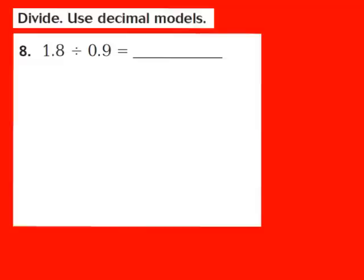Now let's take a look at question number 8 together. The directions say to divide and to use decimal models. For question number 8, they give us 1 and 8 tenths divided by 9 tenths. This question is a little different because we're not dealing with numbers in the hundredths place anymore — this time we have two numbers in the tenths place. We're going to follow the same steps. Step number 1 still says to shade a decimal model to represent the dividend, which is 1 and 8 tenths.